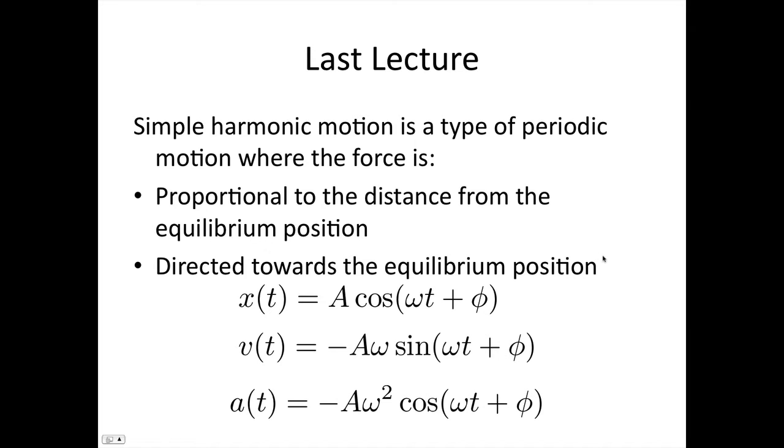So we saw that a spring, with Hooke's law, undergoes simple harmonic motion. We saw that position is equal to A cos(ωt + φ). It satisfies the equations for simple harmonic motion. So we can use this to describe the position of a body undergoing simple harmonic motion. Taking the derivative, we can find the velocity, and taking the second derivative, we can find the acceleration.